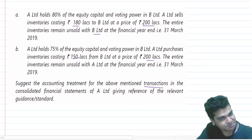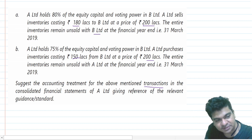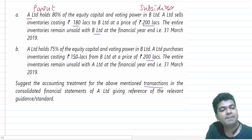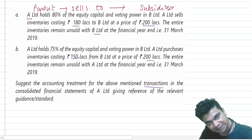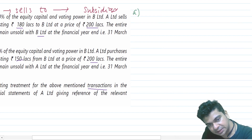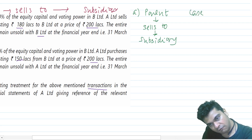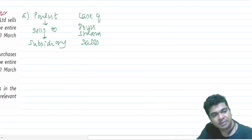These are transactions between the parent and the subsidiary. In the first transaction, A is selling to B. A is holding 80% of shares, so A is the parent company and B is the subsidiary. In other words, the parent is selling to the subsidiary — we understand this as downstream sales in Accounting Standard 21. So for Part A, the parent sells to the subsidiary: this is a case of downstream sales. They are selling at 180 lakhs cost for 200 lakhs.